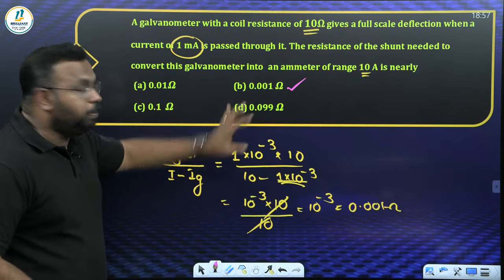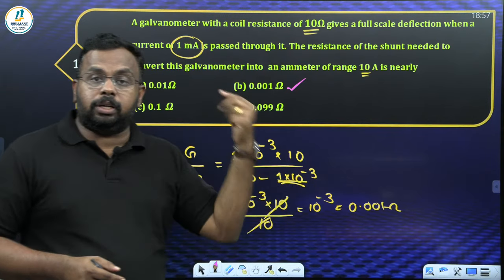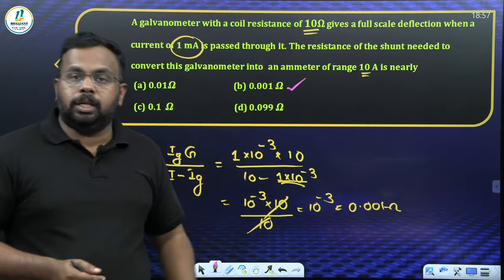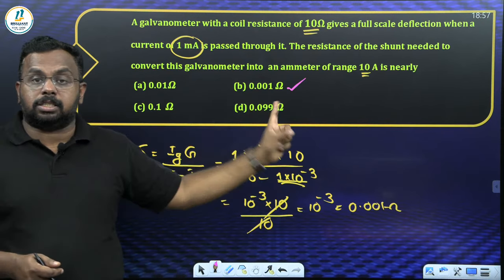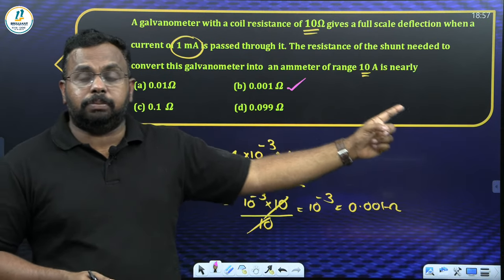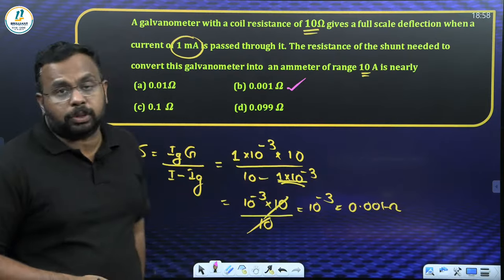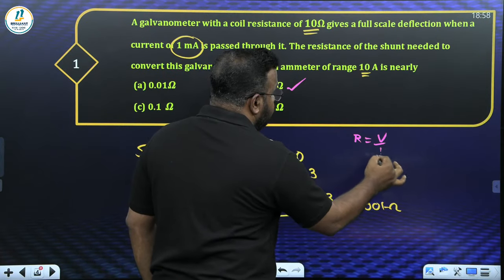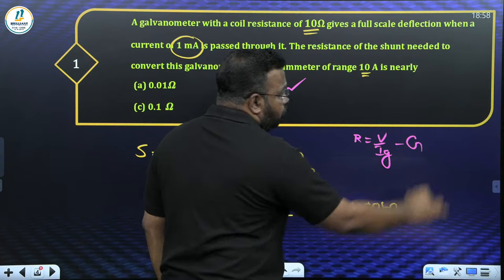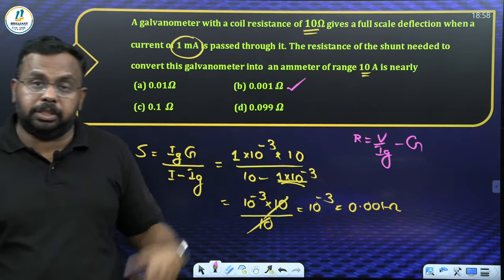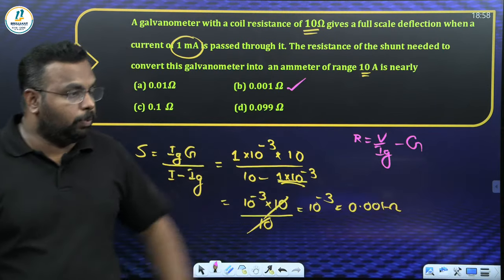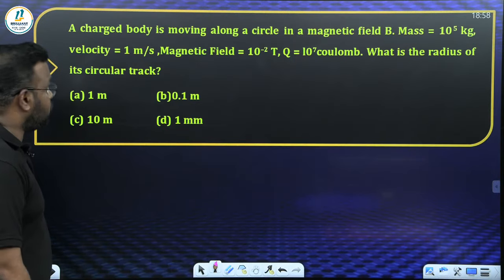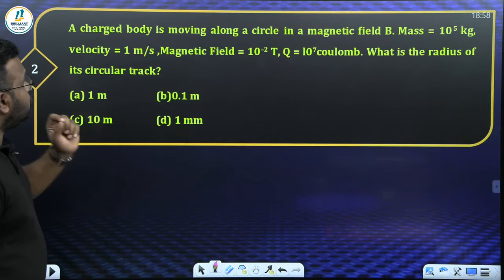Along with this, recall how to convert a galvanometer into a voltmeter: connect a high resistance in series. The formula for that resistance is R = V/I_g − G. This is the formula for finding the resistance needed to convert a galvanometer into a voltmeter.